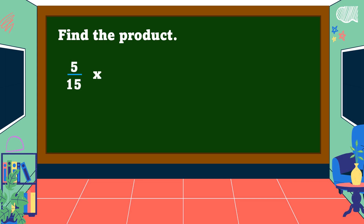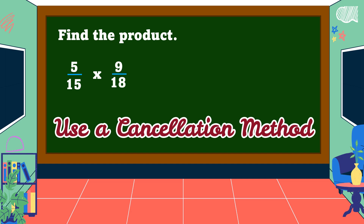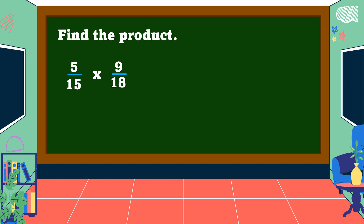To fully understand the steps, let's study some examples. Find the product of 5/15 and 9/18. In this example, we can use a cancellation method first before we multiply both numerators and both denominators, to make our fractions in their simplest form. In using the cancellation method, make sure that you find a common factor and pair the numerator and denominator — we can't cancel both numerators or both denominators. So 5 and 15 have a common factor of 5: 5 divided by 5 is 1, and 15 divided by 5 is 3.